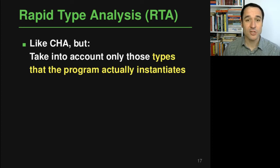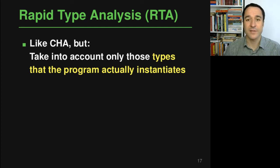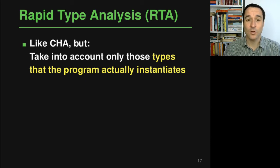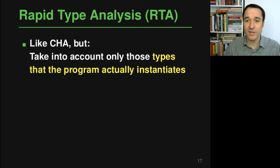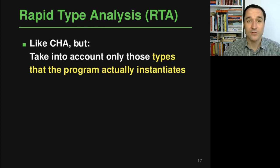To address this imprecision of class hierarchy analysis, there is a variant called rapid type analysis. The idea is that it's basically like class hierarchy analysis, but it only takes into account types that the program actually instantiates at least once. Using the collection example: if the program never uses a LinkedList, then we know for sure that the object will not be a LinkedList, and therefore we certainly do not need that edge in our call graph.